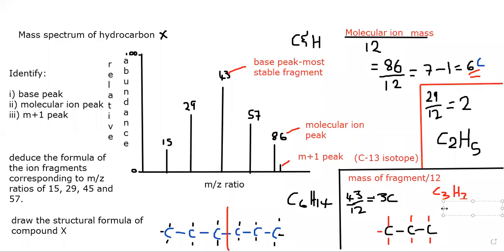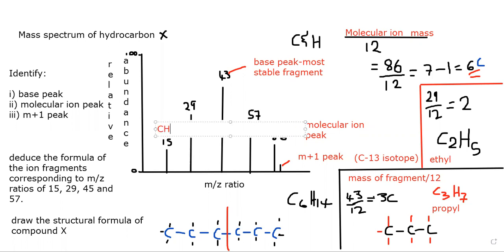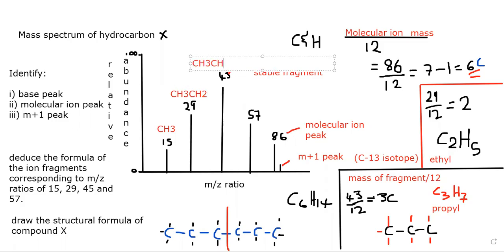C3H7 is a propyl fragment. C2H5 is an ethyl fragment. So whenever you see 29, it's an ethyl fragment. When you see 43, it's a propyl fragment. When you see 15, it's a methyl fragment — that is CH3. So: 15 is methyl, 29 is ethyl, 43 is propyl, and 57 will be butyl.